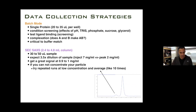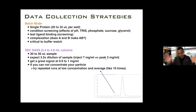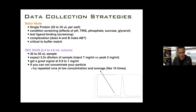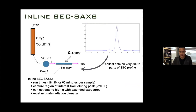The other kind of experiment in bio-SAXS is SEC-SAXS. You can use a 2.4 to 4.8 ml column with 30 to 50 microliters of sample injected. Expect about a 3.5-fold dilution, so if you inject about 7 mg/ml your peak fraction is about 2 mg/ml. You can typically get a great signal between 0.9 to 1 mg/ml. If you can't concentrate your particle, try repeated runs at low concentration and average, like 10 times.